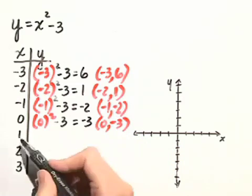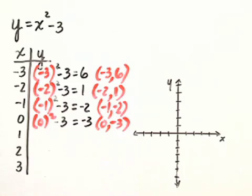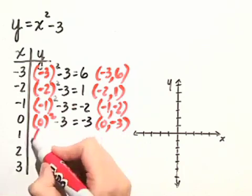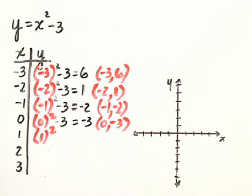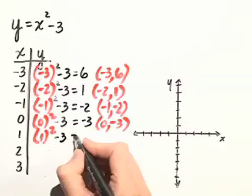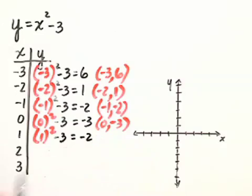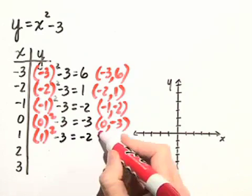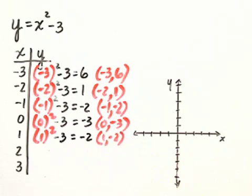Now we get to our positive integers. Let's substitute 1 in for x, and we have 1 squared minus 3, which just gives us negative 2. So that point will be 1, negative 2.